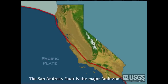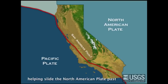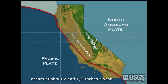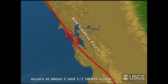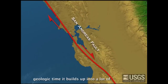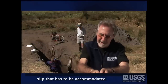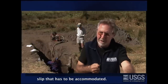The San Andreas Fault is the major fault zone helping slide the North American plate past the Pacific plate. This movement occurs at about 2½ inches a year. It doesn't sound like very much, but over geologic time it builds up into a lot of slip that has to be accommodated.